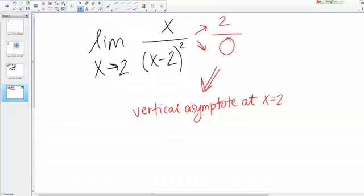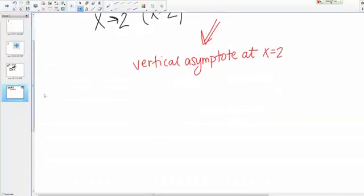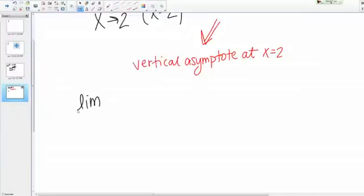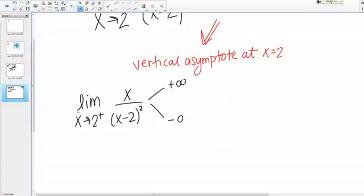So let's start with the limit as X goes to 2 from the right. Because I'm approaching a vertical asymptote at 2, I know that there are only 2 options for this limit. This limit could be either positive infinity or negative infinity. And I need to figure out which one by checking the sign of the function just to the right of 2.